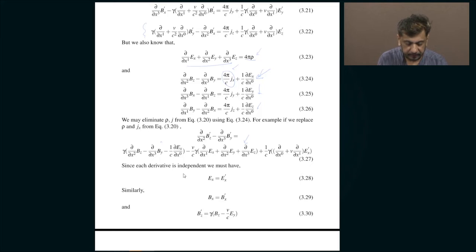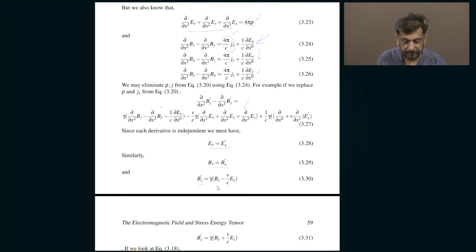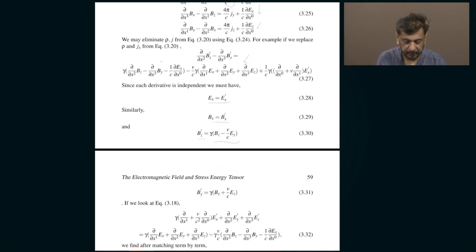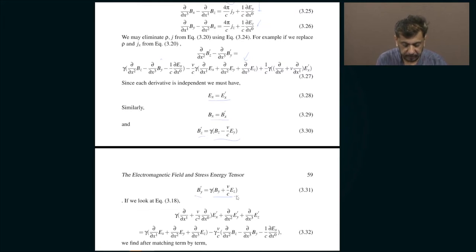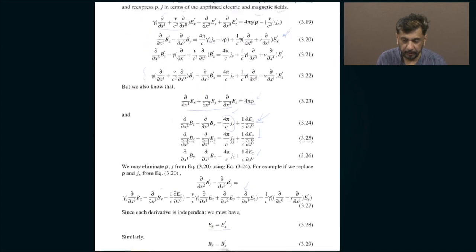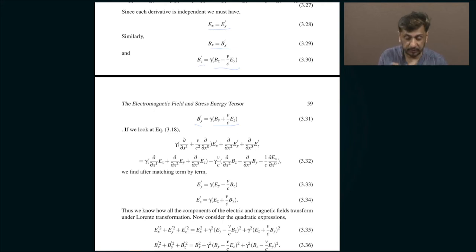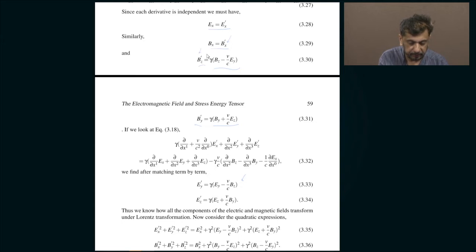Having done that, you simply compare the two sides and you will conclude that this is valid only when E_x equals E′_x, B_x equals B′_x, but B′_z is given by the interesting formula: gamma times (B_z minus V/C times E_y). And then B′_y is similarly determined. Looking at the z-component equation (3.18), you again eliminate the sources and look at the different terms to get the rest of the transformation, telling you how B′_x, B′_y, and B′_z all transform.